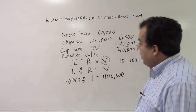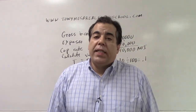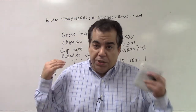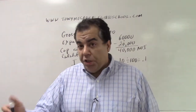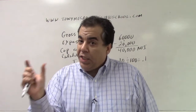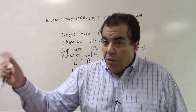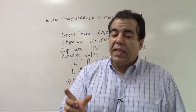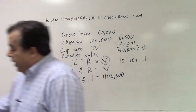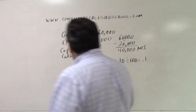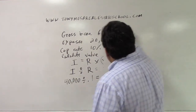That's an example of using Irv the Appraiser — getting the estimate of value of a property using income capitalization. You take the net operating income (not the gross income — the net income) and divide by the capitalization rate to get the estimate of value.